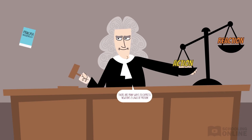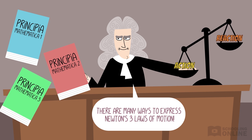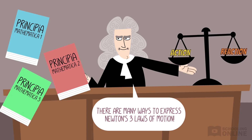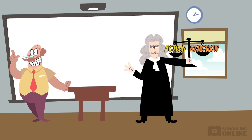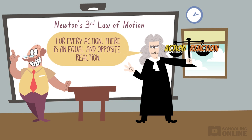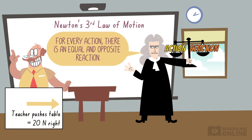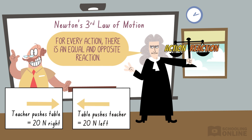As we mentioned previously, there are many ways to express Newton's three laws of motion. The most popular version of Newton's third law states: for every action, there is an equal and opposite reaction. For example, when you push an object 20 newtons right, the object pushes back with a force of 20 newtons left. These forces are an action-reaction pair, or a Newton's third law pair.